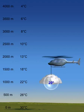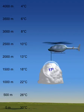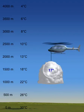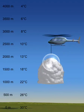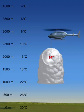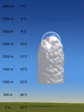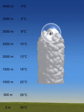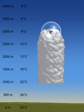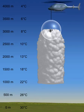The latent heat released inside the cloud warms the air to the point that the rising air is now warmer and less dense than the air surrounding it. The cloud will continue to build until the rising air inside the cloud becomes the same temperature as the air surrounding the cloud.